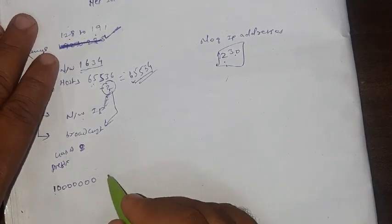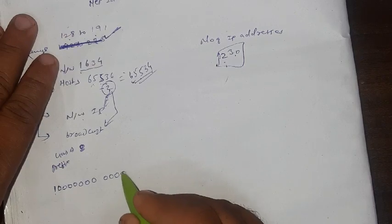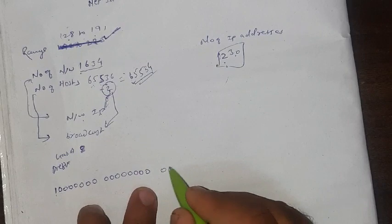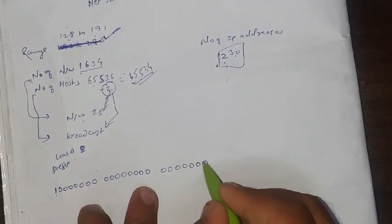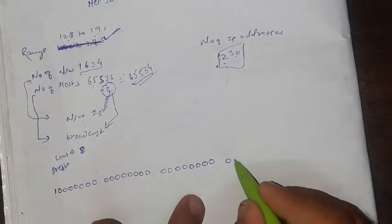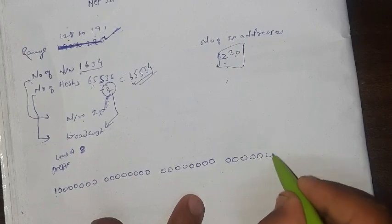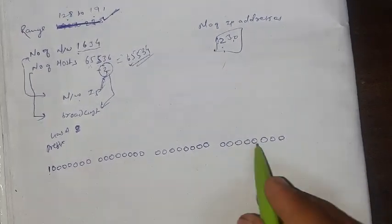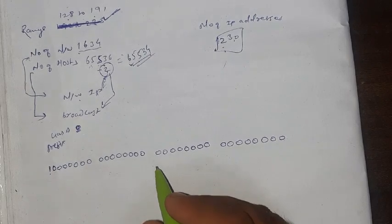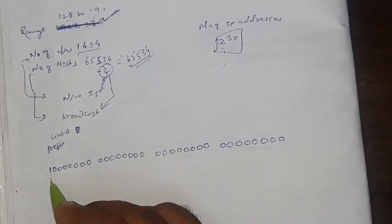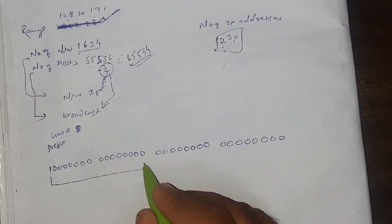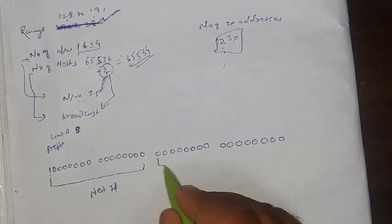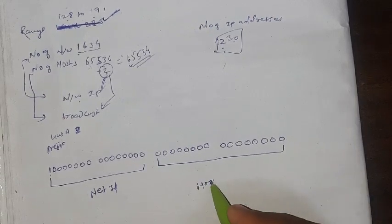1 2 3 4 5 6 7 8, this is one byte. 1 2 3 4 5 6 7 8, this is second byte. 1 2 3 4 5 6 7 8, this is third byte. 1 2 3 4 5 6 7 8, this is fourth byte. These are the total 32 bits. From this 32 bit, the first 16 bits for what? For net ID, and the rest of the 16 bits for host ID.